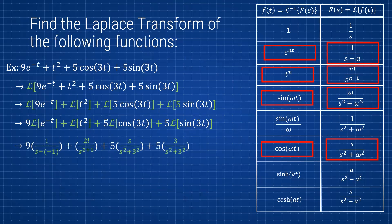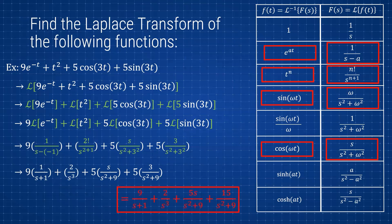Writing out the Laplace transforms: for e^(−t), since a = −1, the denominator becomes s + 1. For t², we get 2!/s³. For 5cos(3t) we get s/(s² + 9), and for 5sin(3t) we get 3/(s² + 9). Distributing all coefficients, the final answer is: 9/(s + 1) + 2/s³ + 5s/(s² + 9) + 15/(s² + 9). As you can see, this process is pretty straightforward and not too complicated.